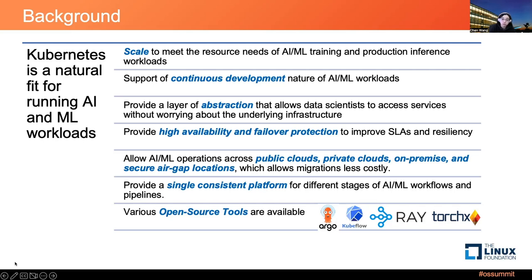It can also provide the elasticity needed through autoscalers to scale production inference workflows. Kubernetes gives you nice support for continuous development required by AI and machine learning workflows. It provides a layer of abstraction that allows data scientists to access various services without worrying about the underlying infrastructure, and can provide high availability and failover protection to improve your service level agreement and resilience.